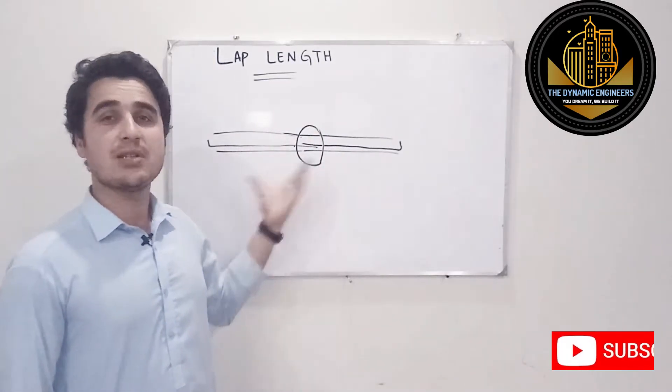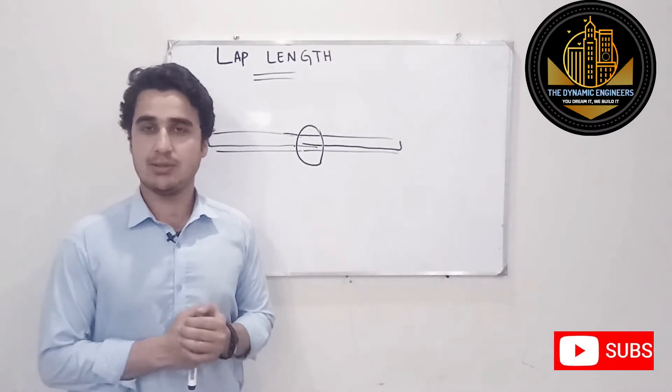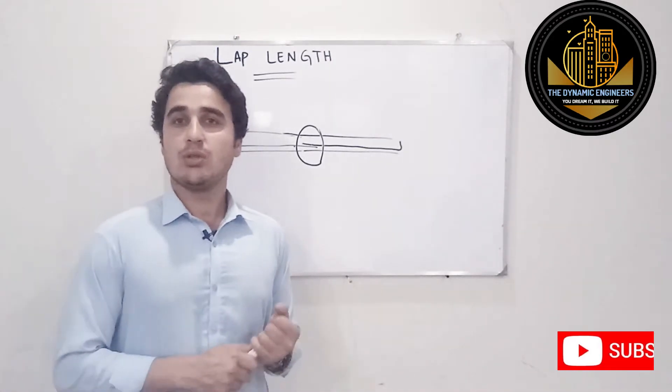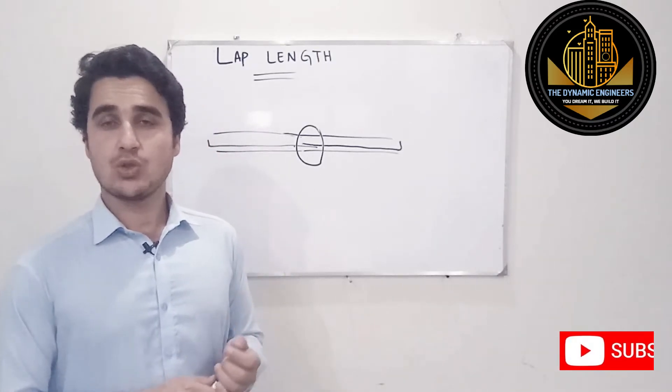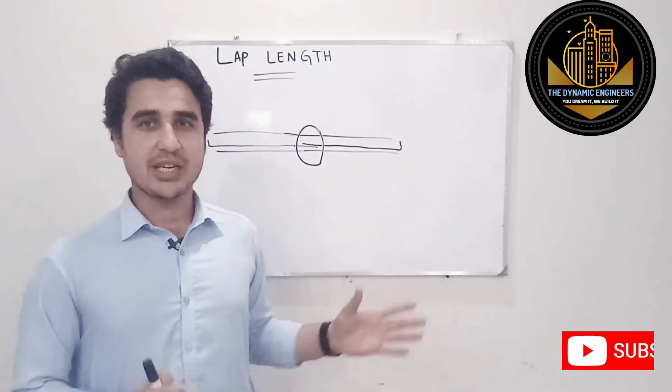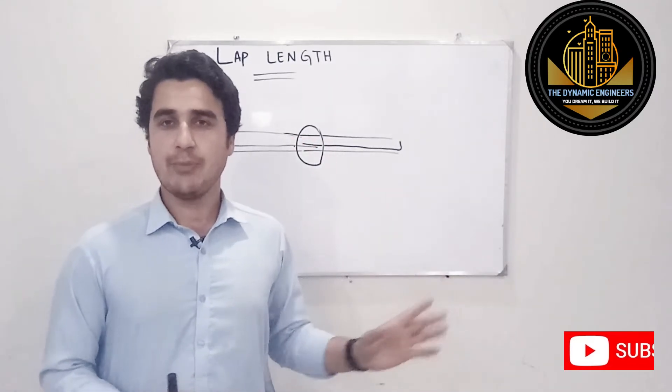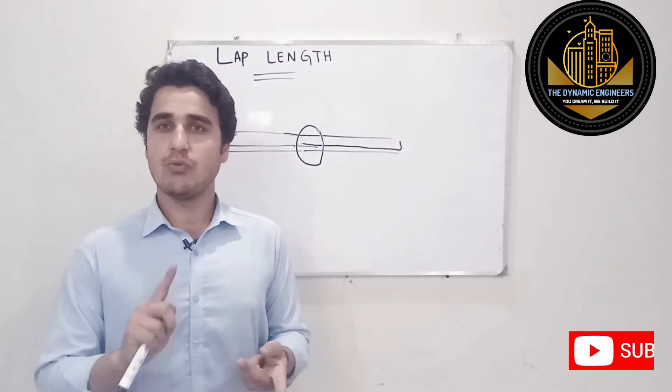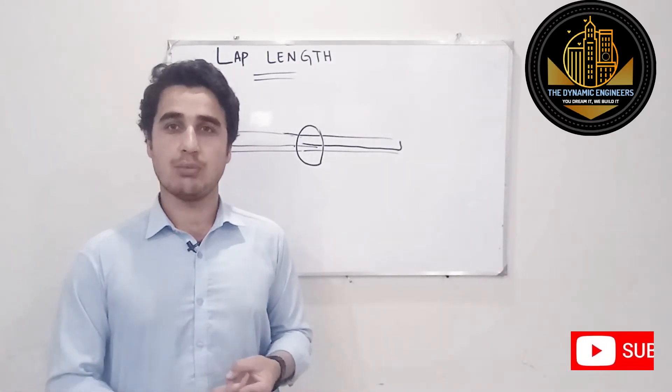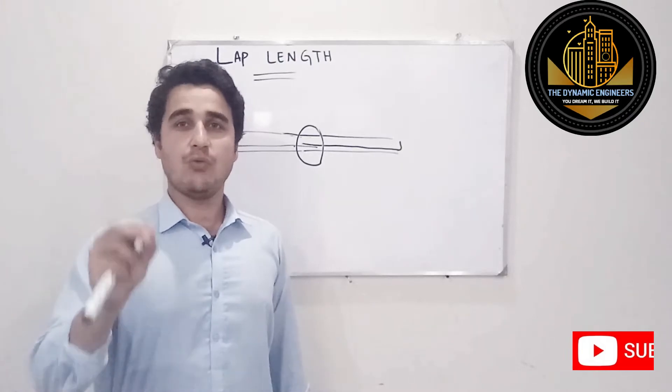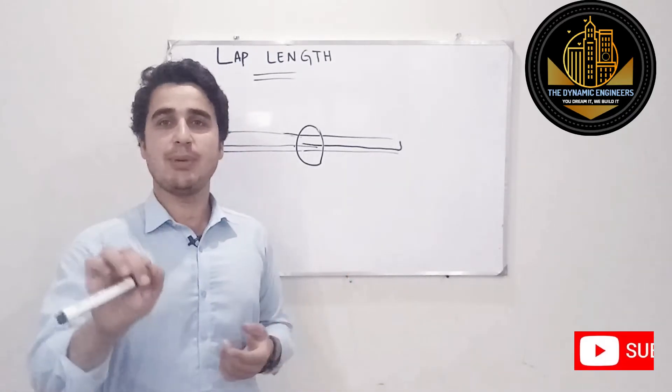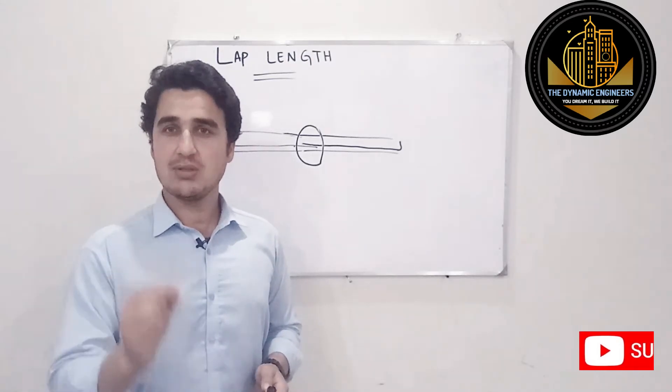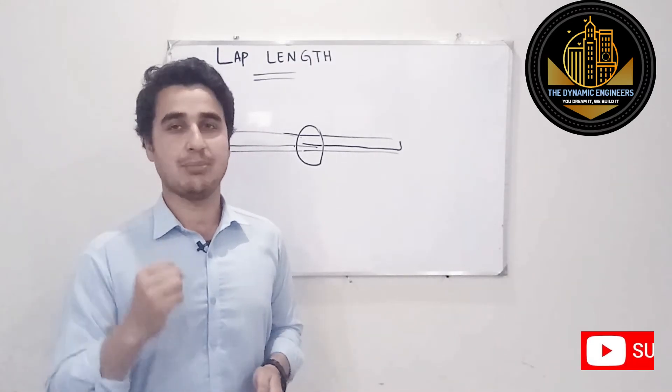So this was the definition, or this was the purpose of lap length - that why do we provide lap length. Now what are the different values which are needed to provide lap length? So in normal, I will be talking about building construction. So in normal building frames we have beams, we have slabs, and we have columns. So we do need to know about these three members.